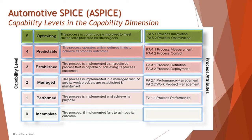Looking at the process attributes across levels: Level 0 has no process attributes at all. Level 1 has the process attribute of process performance — the output must be efficient regardless of what you're using. Level 2 uses performance management and work product management, ensuring artifacts and assets generated during the test process are well managed. Level 3 uses process definition and process deployment throughout the organization, ensuring strict adherence.